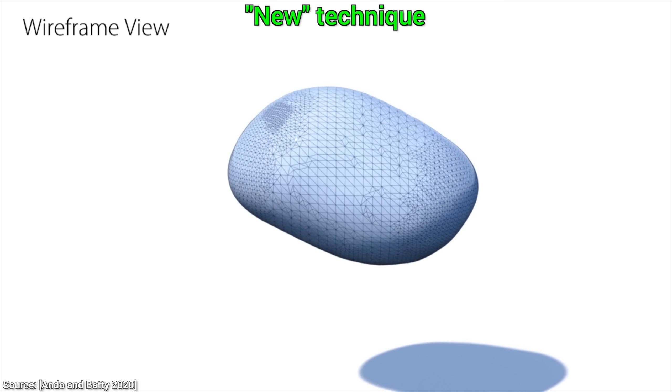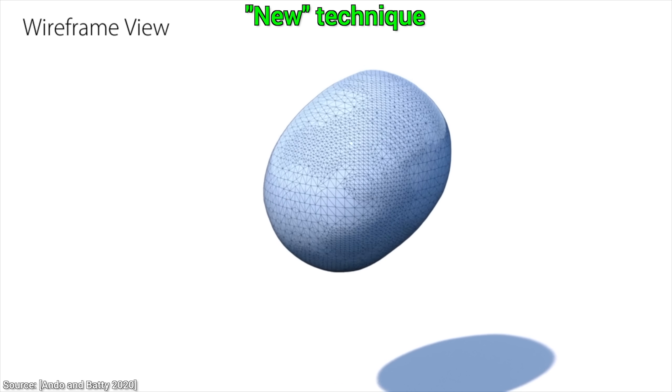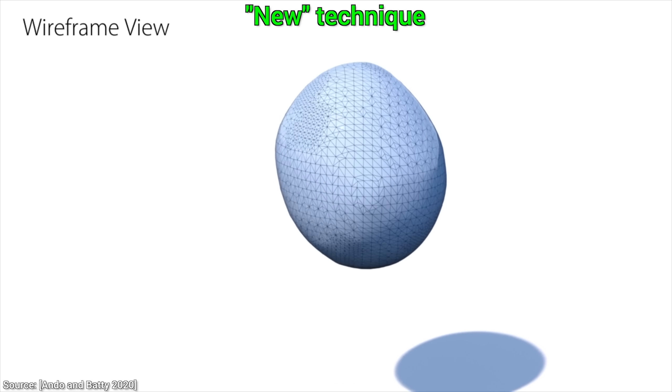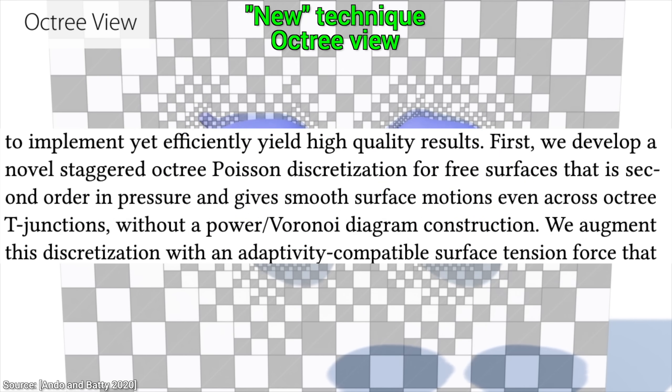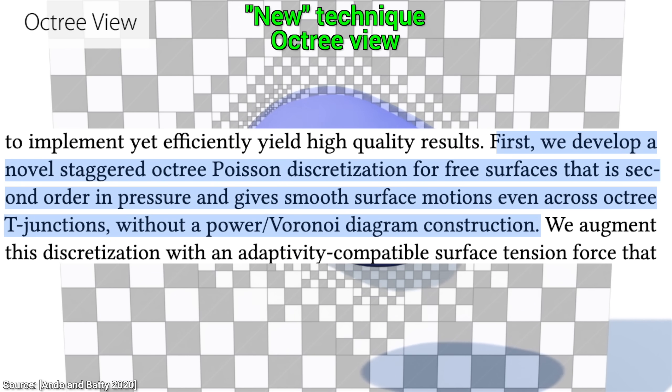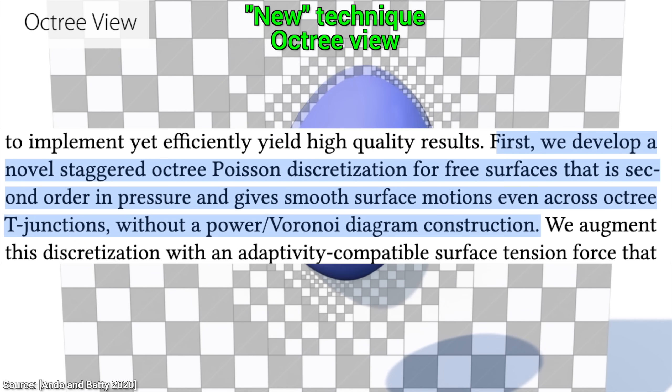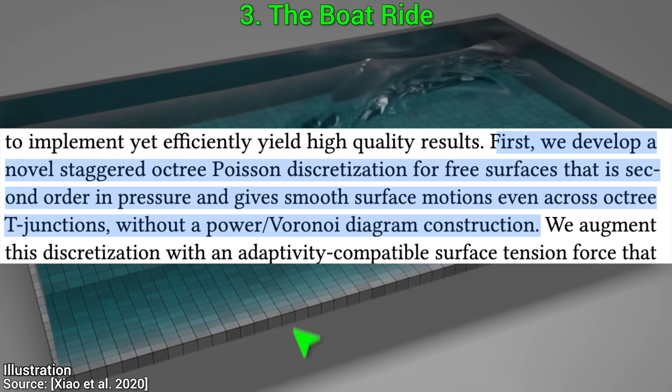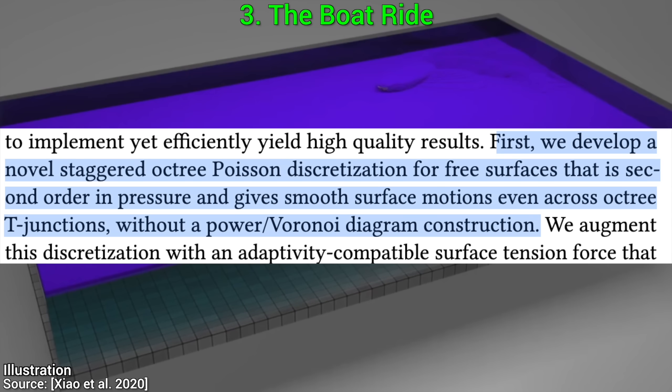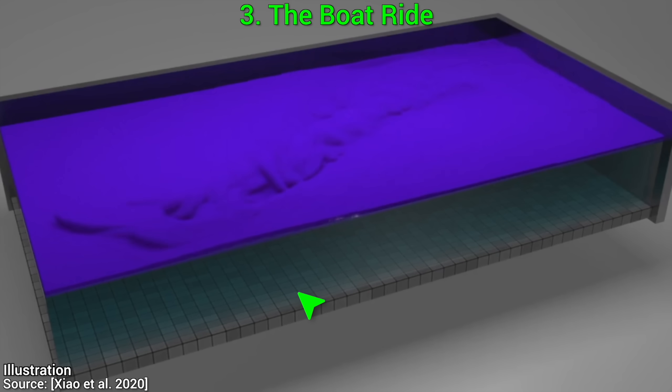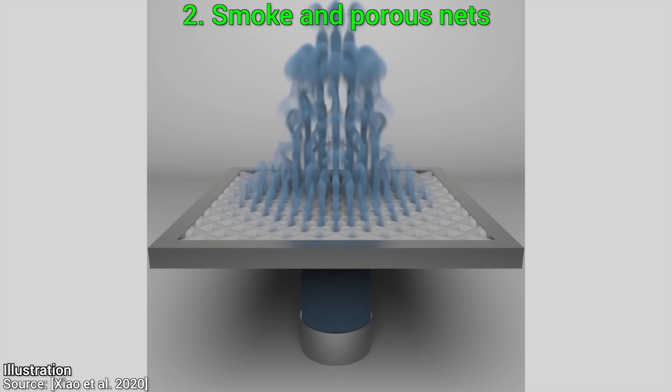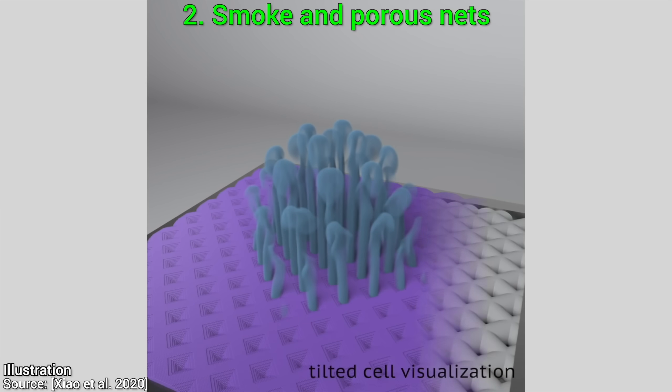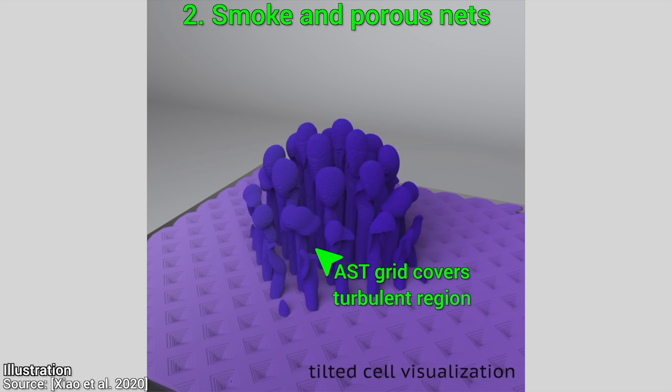Now, I'll try to explain what this means, but I mean, listen, this is coming from the paper, don't get frightened. We develop a novel staggered Octree Poisson discretization for free surfaces that is second order in pressure and gives smooth surface motions even across Octree T-junctions without power slash Voronoi diagram construction. And it goes on and on, and you may be thinking, maybe it is not too late to close this video in horror. But wait, I'll try to explain it in simple, simple words.